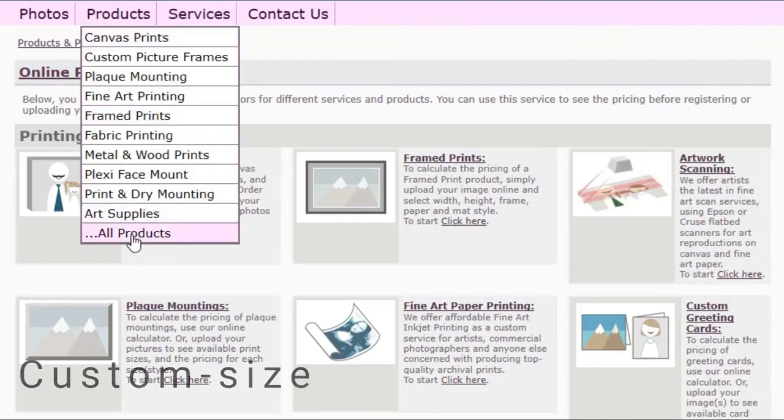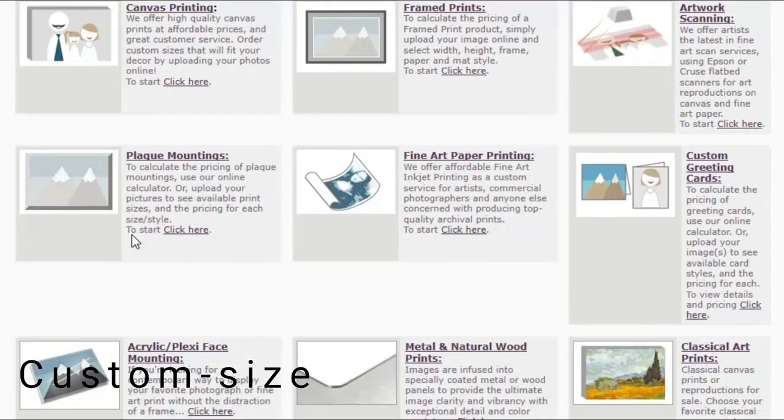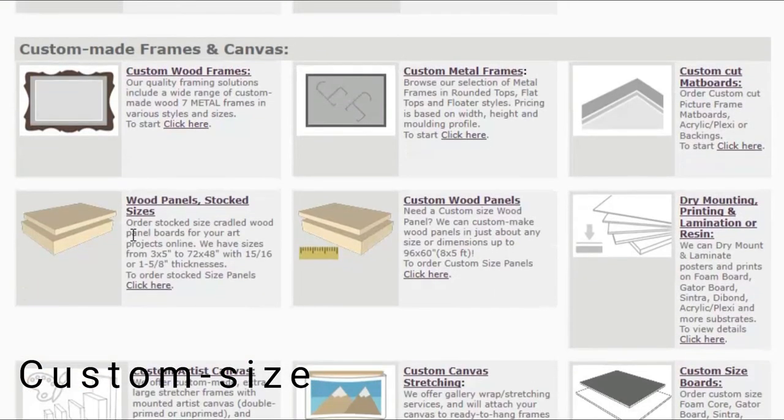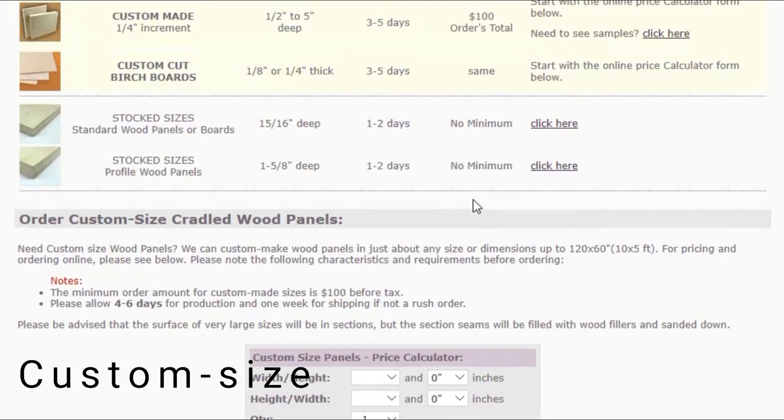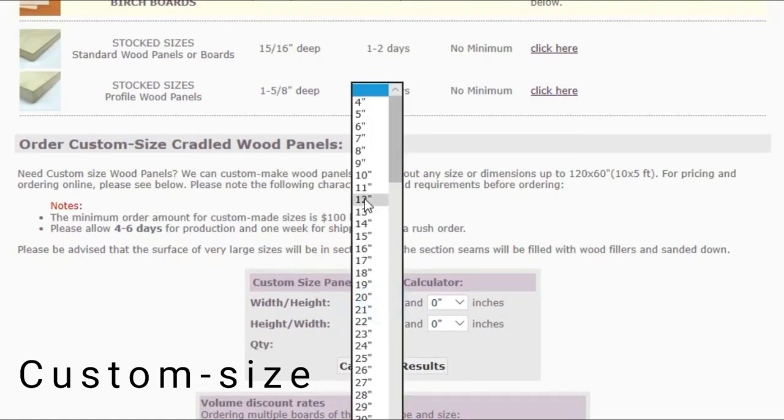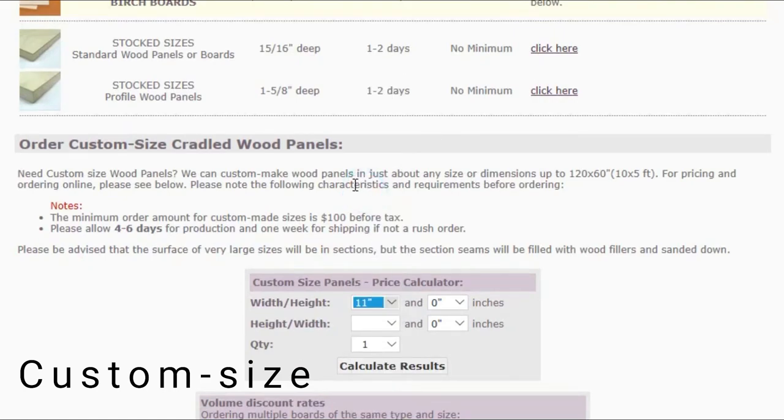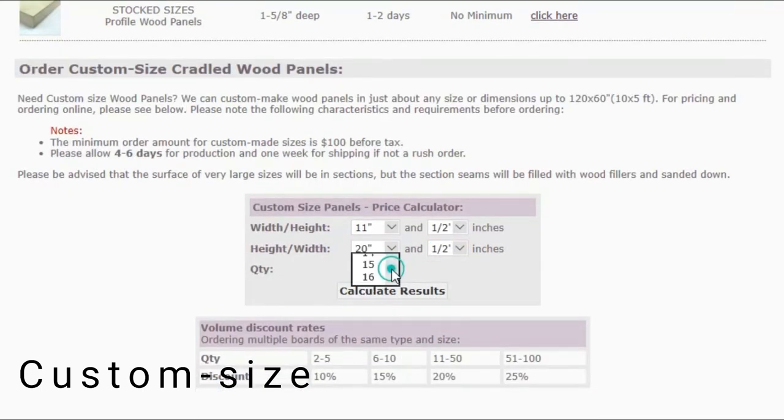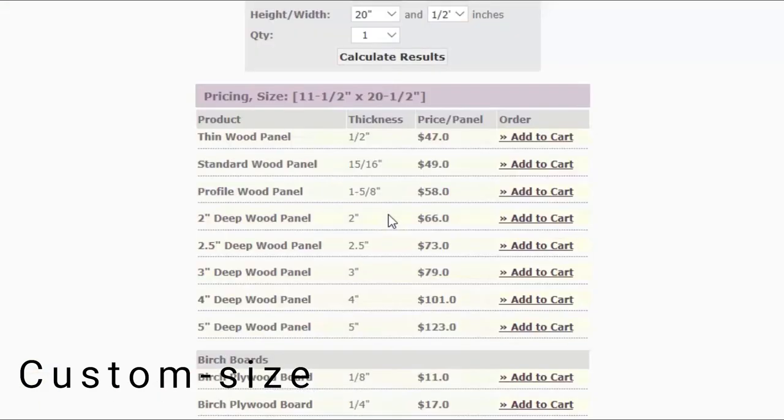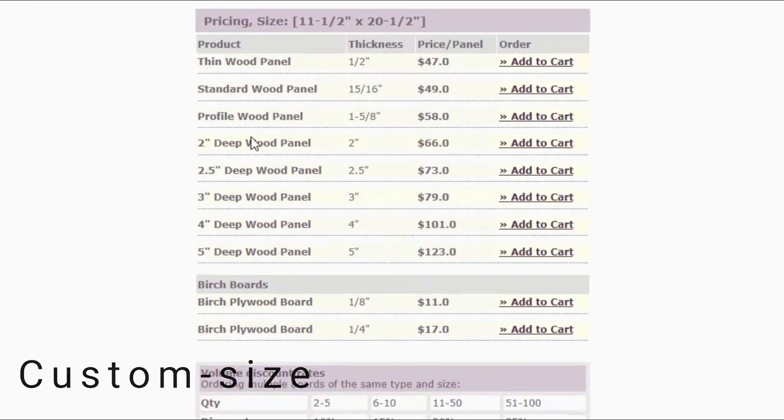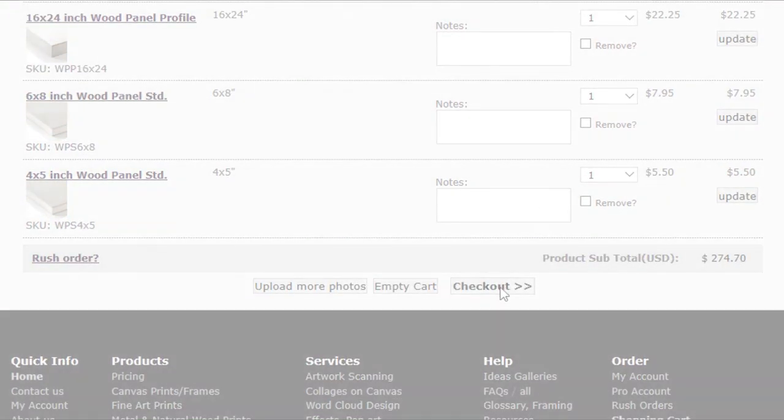To order custom, under all products, click on custom wood panels. Enter the exact width and height. For example, 11.5 inch by 20.5 inch, and add quantity. Press calculate result to see optional depth and add to cart. Finally, you can check out.